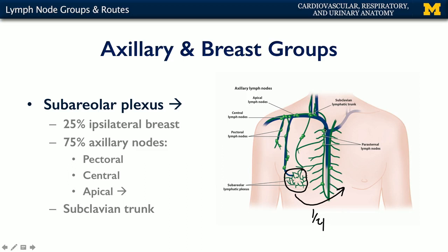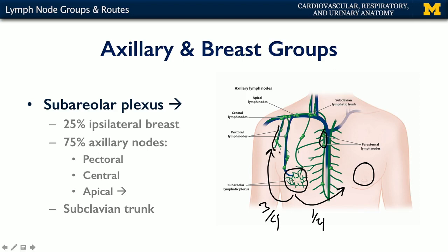About one quarter moves to the parasternal nodes and to the ipsilateral breast. Three quarters are going to move up into the axillary group, and the first cluster of lymph nodes picked up from the subareolar lymphatic plexus into the axillary group are the pectoral nodes.